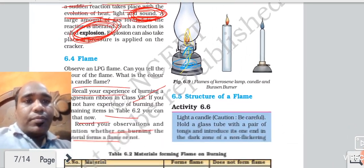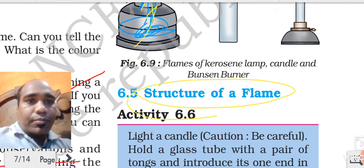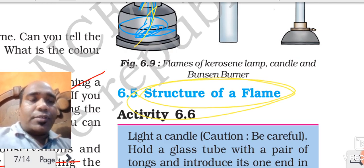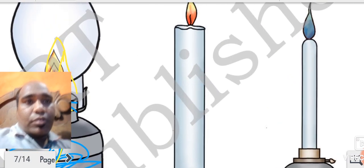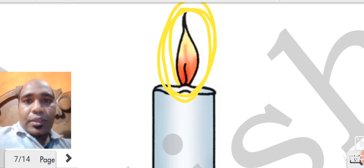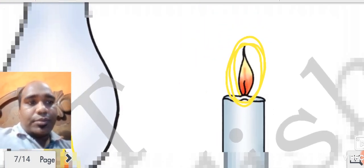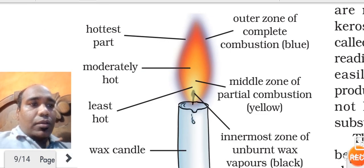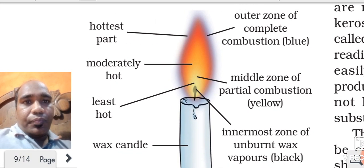Now, structure of flame - this is a very important part, the most important part of this chapter. We will study about the structure of this flame. A flame has different zones - three zones. One thing you tell me: the flame is of which color? It is not just one color; if you observe carefully, it has three colors.